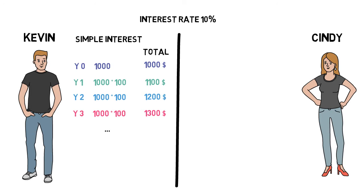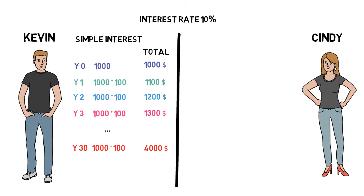After 30 years, Kevin has got $3,000 of interest — $100 each year during 30 years. As he withdraws the interest every year, he doesn't get any interest on interest, or compound interest. So in total, he has got $4,000 after 30 years.